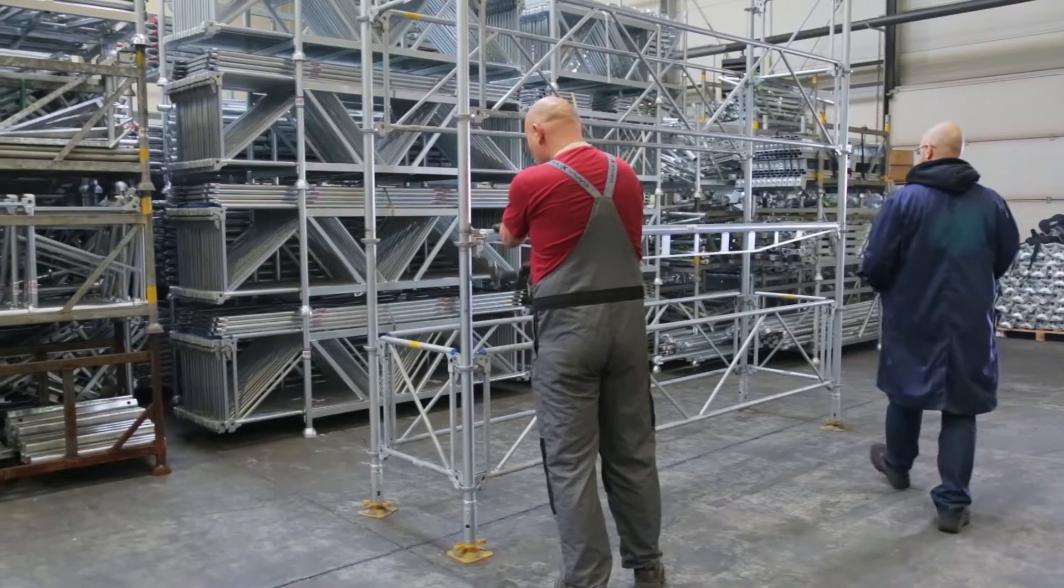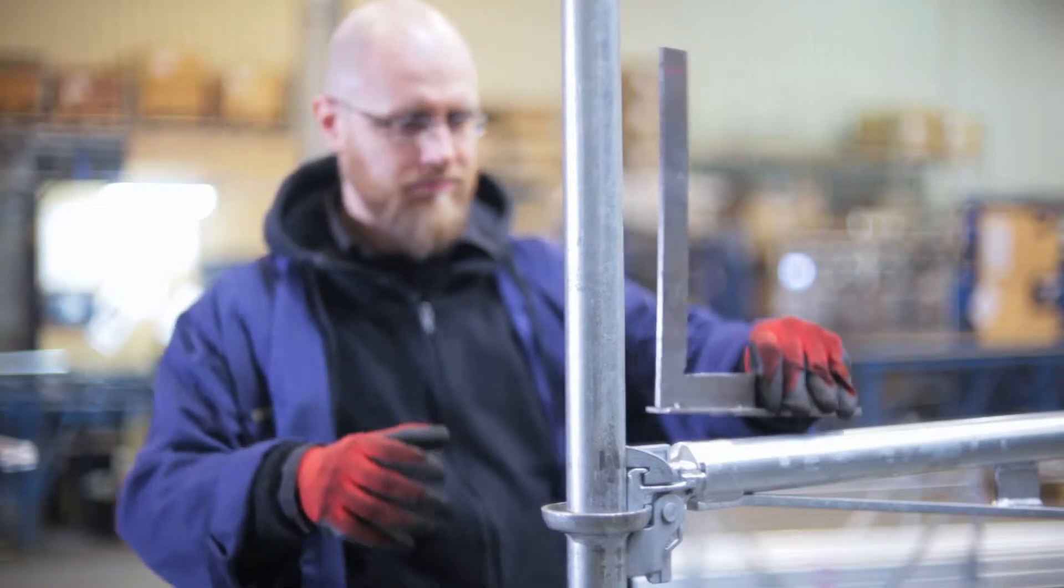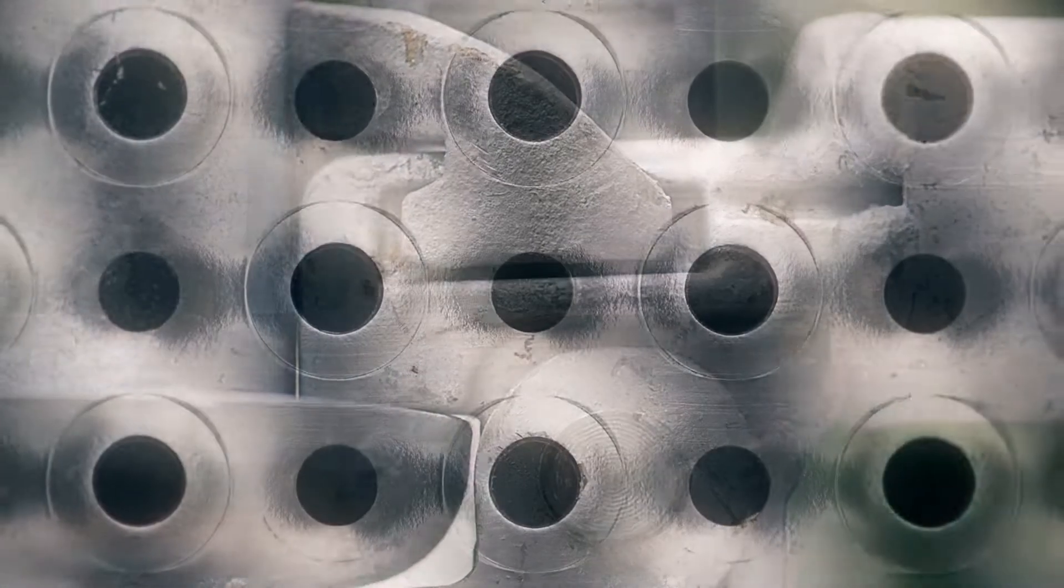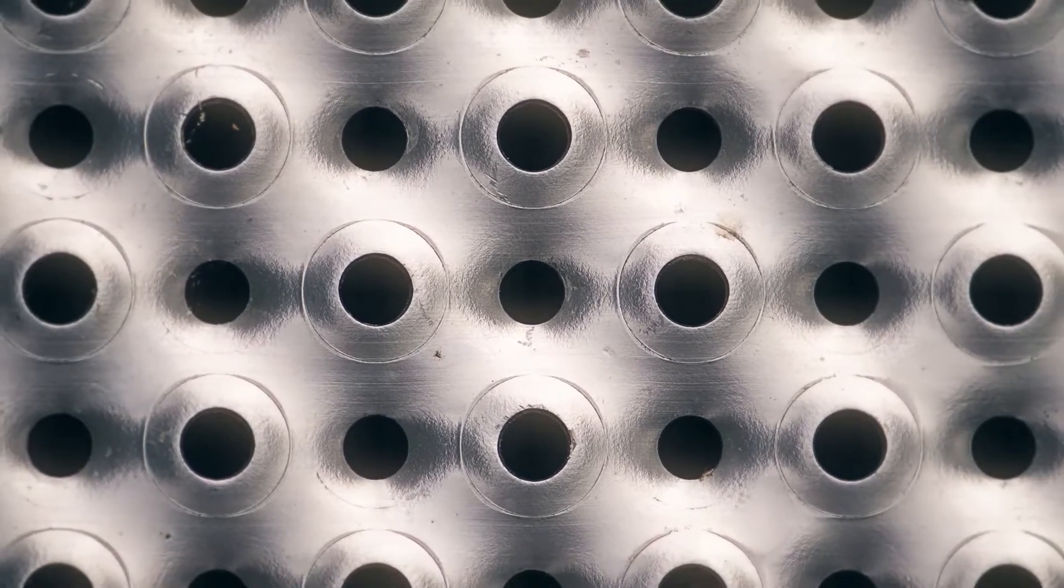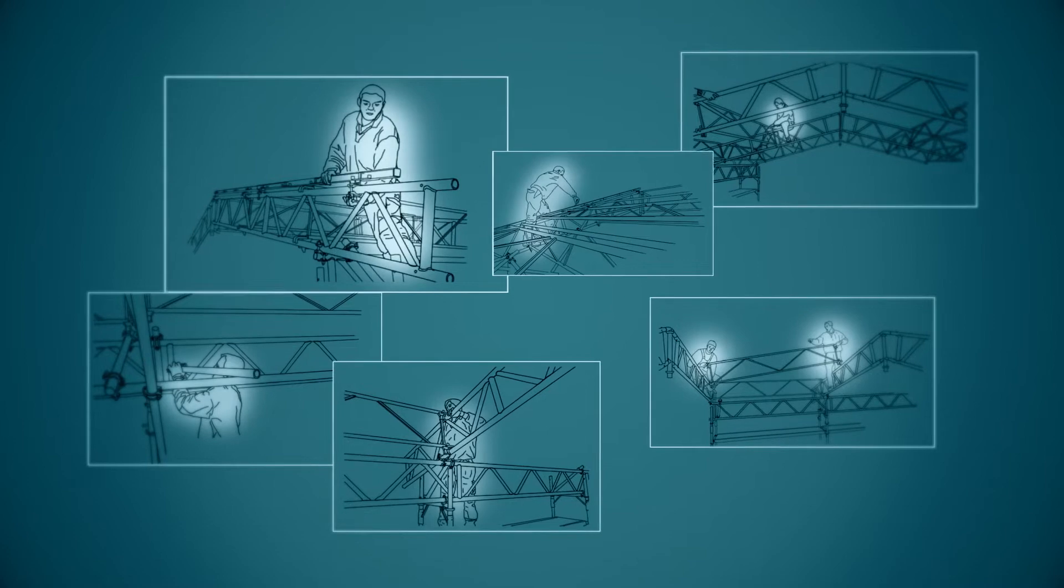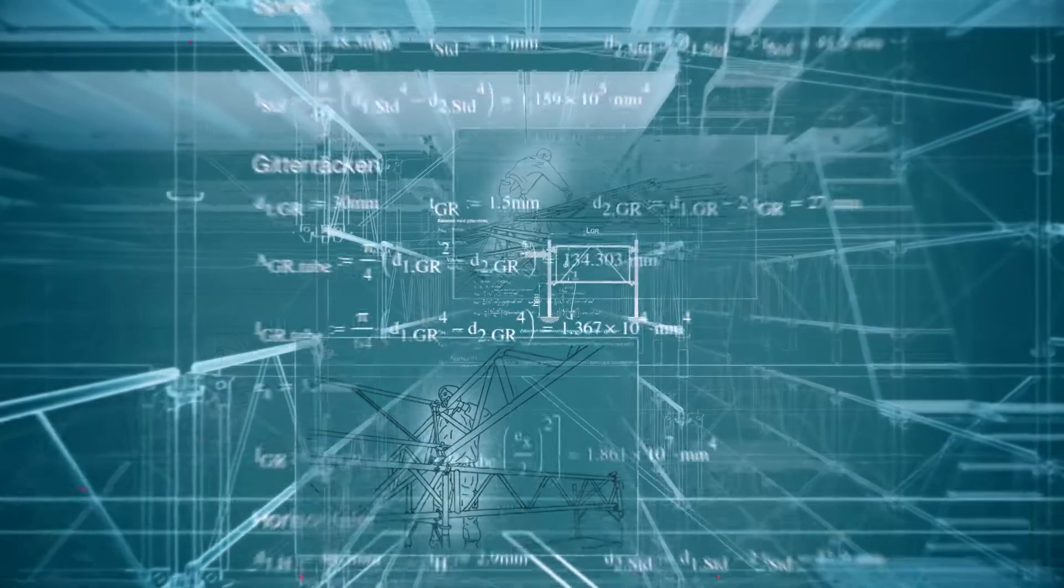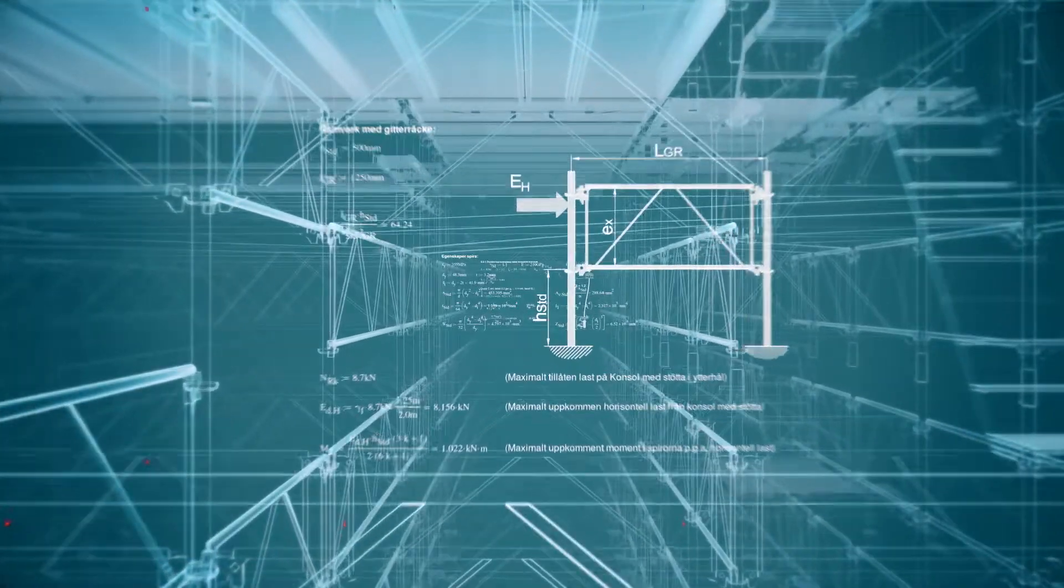The components are also traceable by marking. We have built-in quality controls and are consistently developing our production and self-monitoring. Our products do not contain organic materials. We only have steel and aluminum in our platforms and tow boards. Any wear that occurs is usually caused by bad handling.